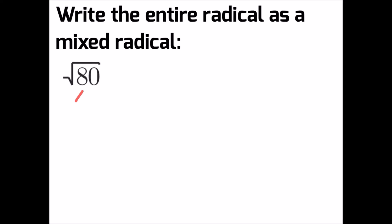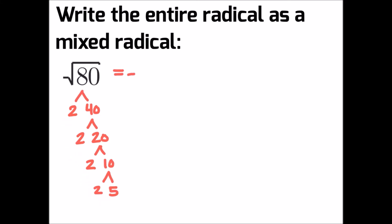Start by writing out the prime factors using a factor tree for 80. If you don't know how to find the prime factors, be sure to click the card above for a video explaining that. Now we can rewrite the square root of 80 as its prime factors: 2 times 2 times 2 times 2 times 5.